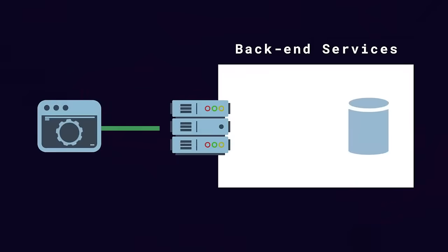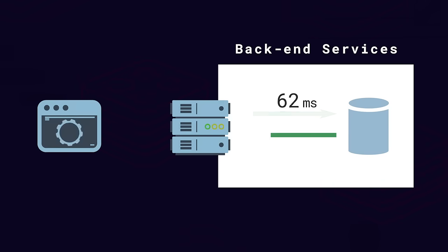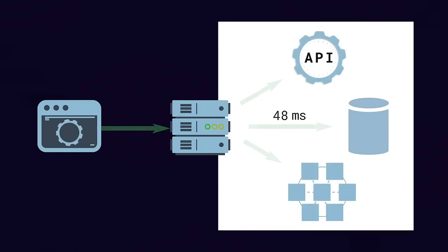Now that you know what caching is and why it's important, let's look at how a cache fits in your system architecture and review a basic caching algorithm. The backend receives a request and then queries a disk-based data store to retrieve the necessary records. Let's say that each request takes around 75 milliseconds to fulfill. This might not seem like a long time, but remember, this is just one backend request. It's often necessary to make multiple requests to render a given view in an application. 75 milliseconds doesn't give us much wiggle room, especially if we're under load.